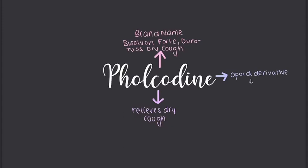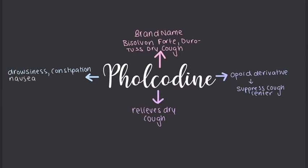However, pholcodine is an opioid derivative used for coughs. How it works is it suppresses the cough center, which is a region of the brain that controls coughing. The cough center is located in the medulla in the brainstem. Some side effects include drowsiness, constipation, nausea, vomiting, and a rare side effect is respiratory depression.